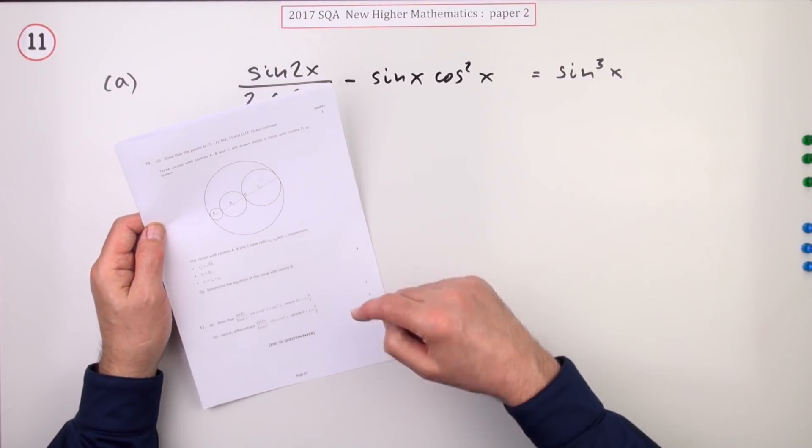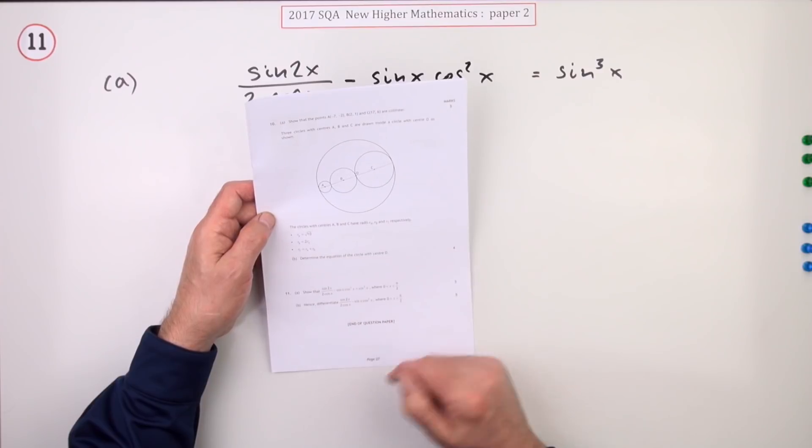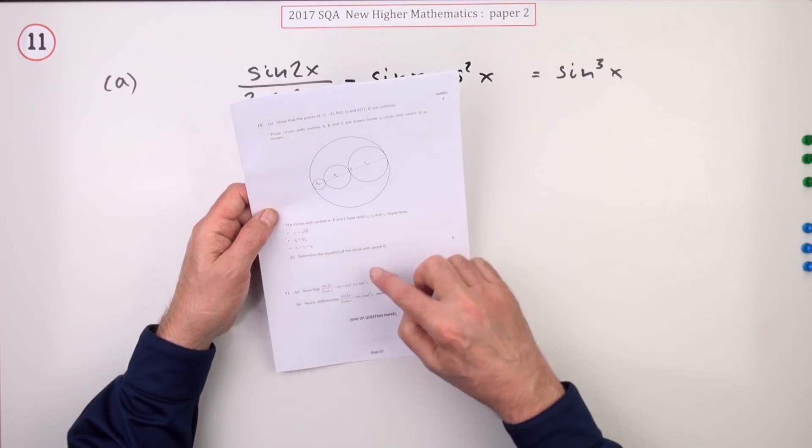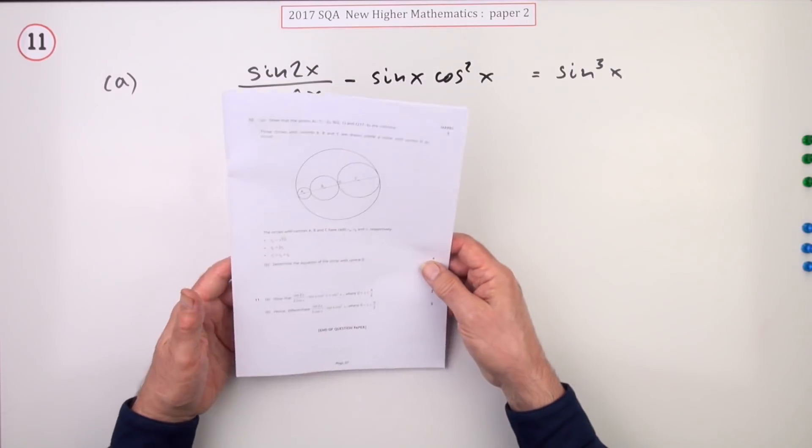Number 11, the last question in paper 2 of the 2017 New Higher Maths. There we go, trigonometric identity. It's a six mark question here. First part, the trig identity. The second part is just do something with it.